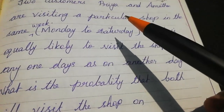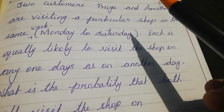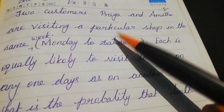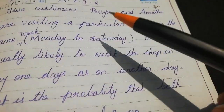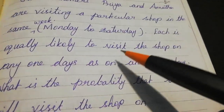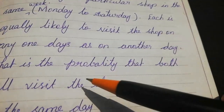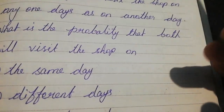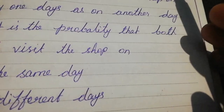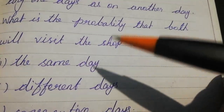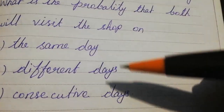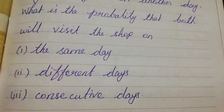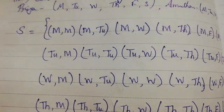Priya and Amudan are visiting a shop on weekdays, Monday to Friday. The total possibilities for the sample space: each person has 6 possible days, so we consider the combined outcomes. Different days and same days are the two main events we need to find.